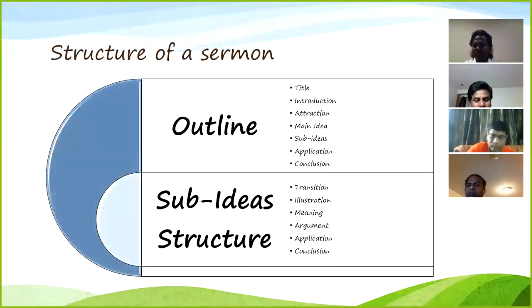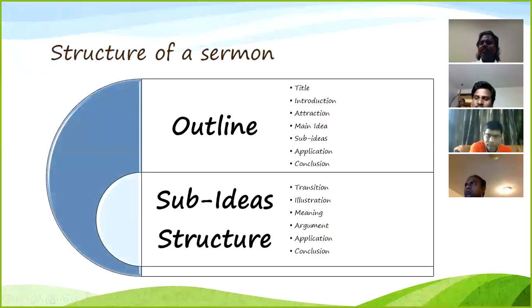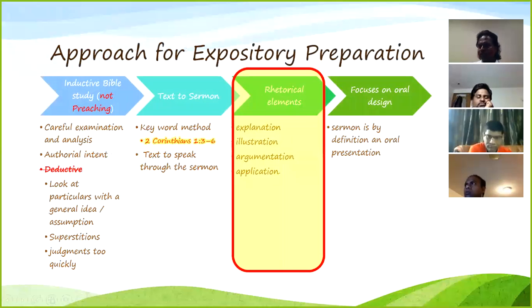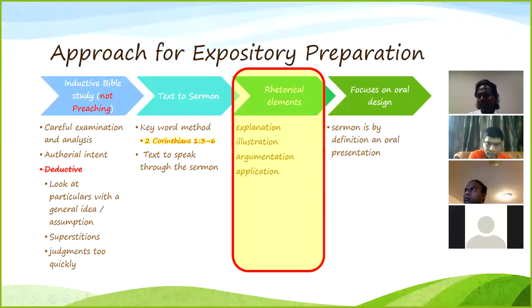This slide is an outline we discussed last week. Without going into details, you can see there is an overall outline for a sermon and specific outlines for each division. Each division includes a transition, illustration, meaning, argument, application, and conclusion — the four rhetorical elements we talked about are what we will be seeing and reusing here.